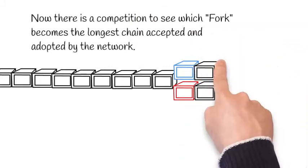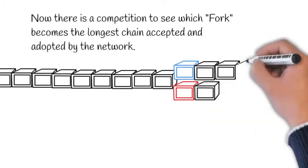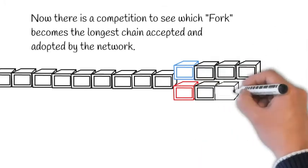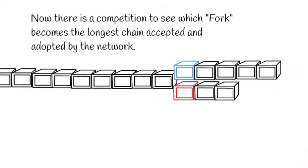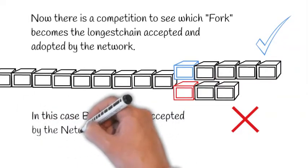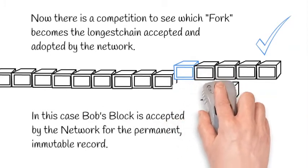As the miners are in different parts of the network, they will see different versions of the blockchain and add their blocks to the chain that they believe will be the longest. Eventually, one of the longer chains will prevail, and in this case, it is Bob's block that was accepted by the network for the permanent and mutual record.